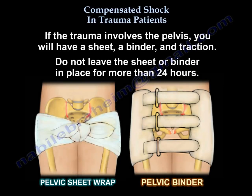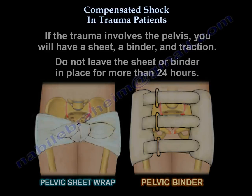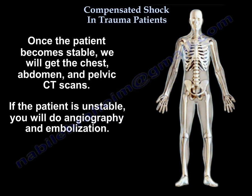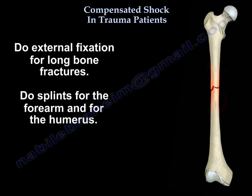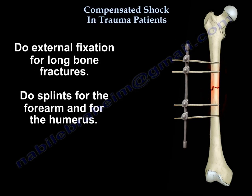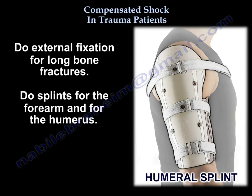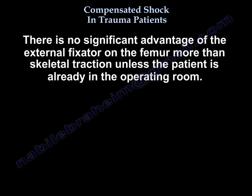If it is a pelvis, you will use a sheet or binder, and traction. Please don't leave the sheet or binder more than 24 hours on the patient. Once the patient becomes stable, get chest, abdomen, and pelvis CT. If the patient is unstable, do angiography and embolization. Use external fixators for long bone fractures and splints for the forearm and humerus. Note that there is no significant advantage of the external fixator on the femur over skeletal traction unless the patient is already in the operating room.